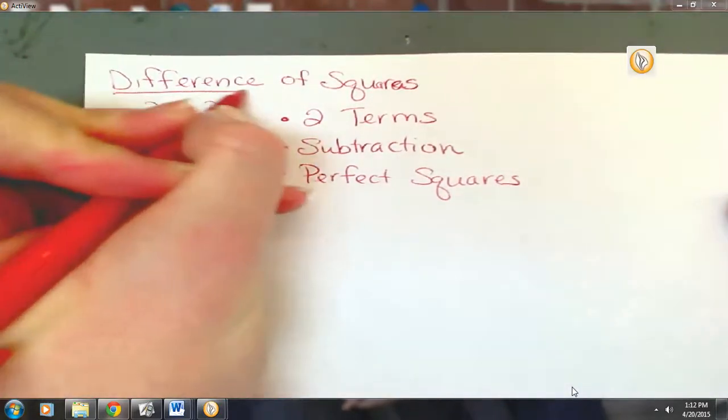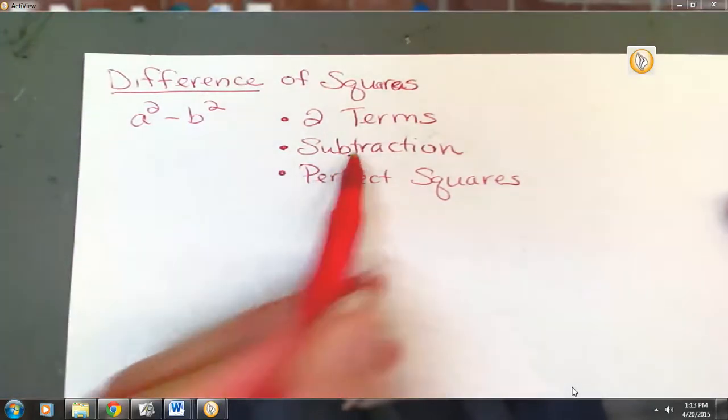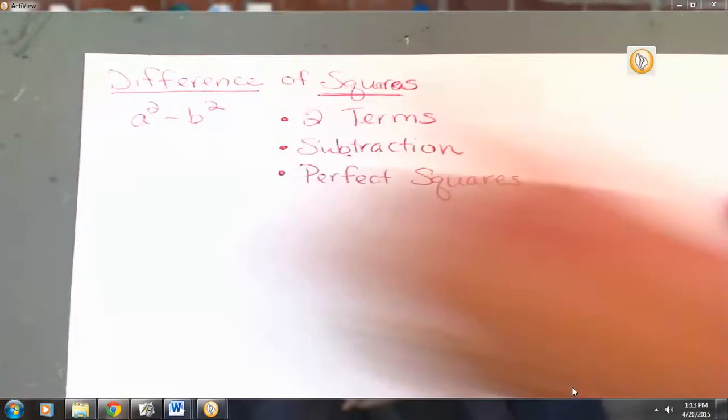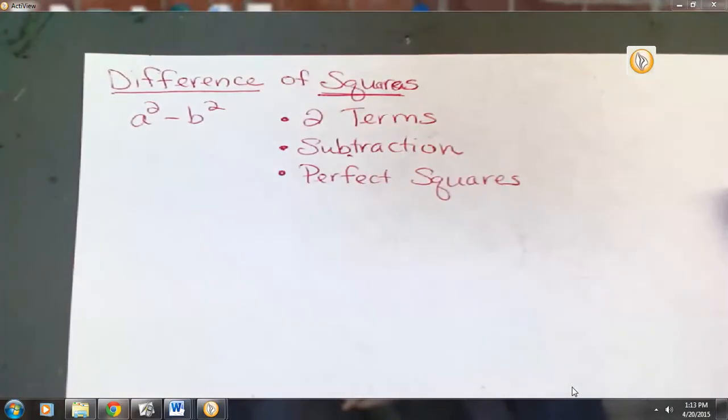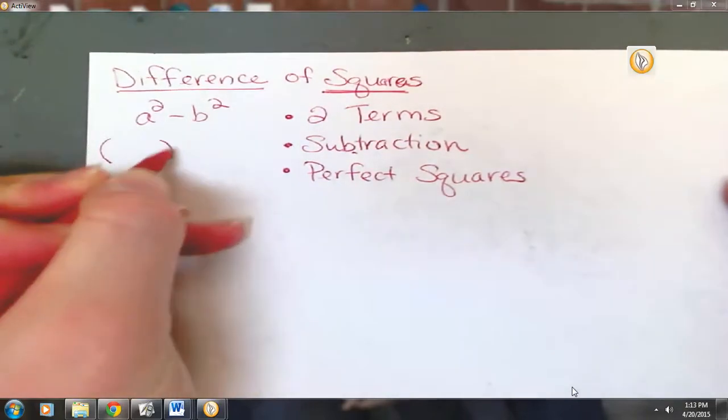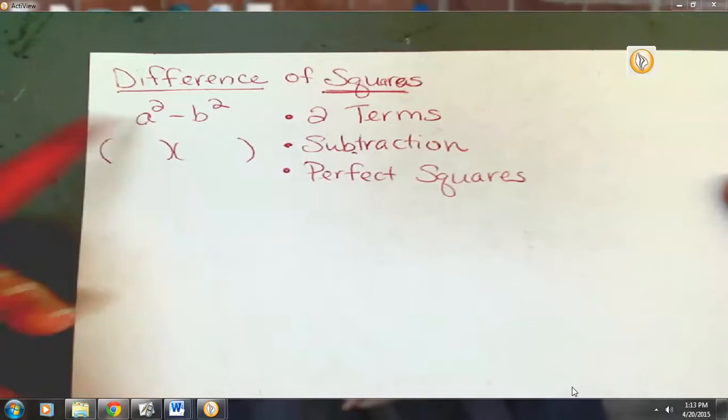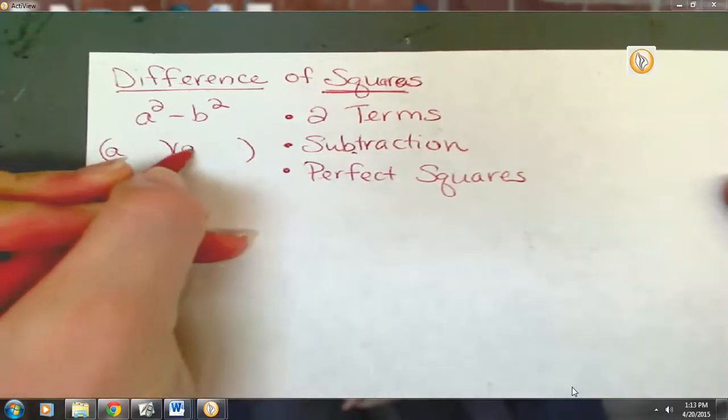And think about what the word difference of squares means. The word difference means subtraction, doesn't it? So that gives kind of a hint why we need subtraction. And squares—think perfect squares. We have to have those. We're going to factor. So how are we going to factor? Well, to factor this, we're just going to take the square root. What is the square root of a squared? A. So A and A.